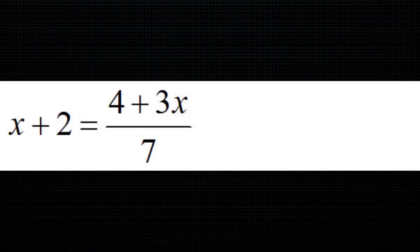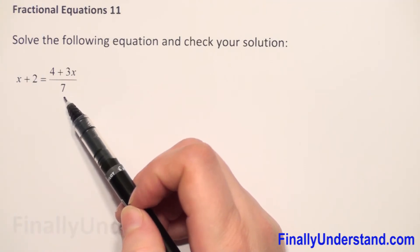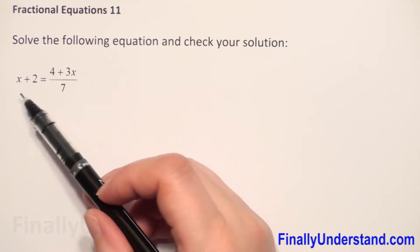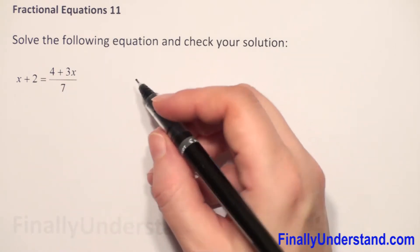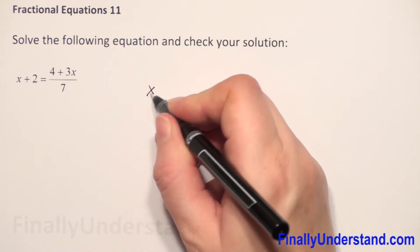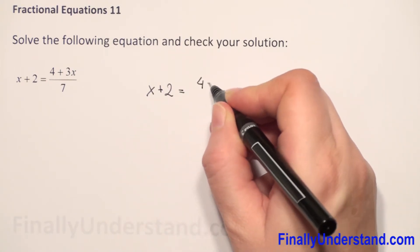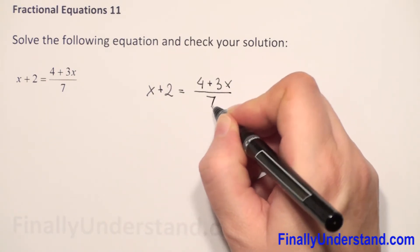We have a given fractional equation. On the right side we have a fraction and in the numerator we have 7. So to get it over 7 we can multiply both sides by 7. We have x plus 2 is equal to 4 plus 3x over 7.